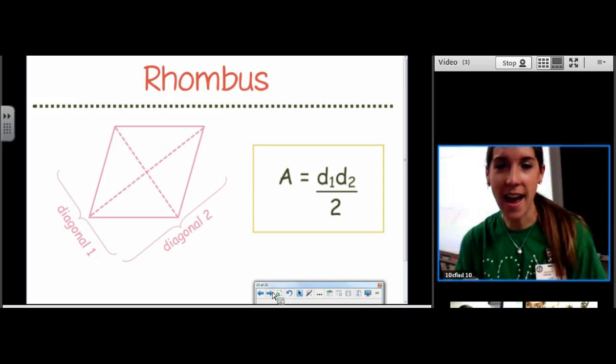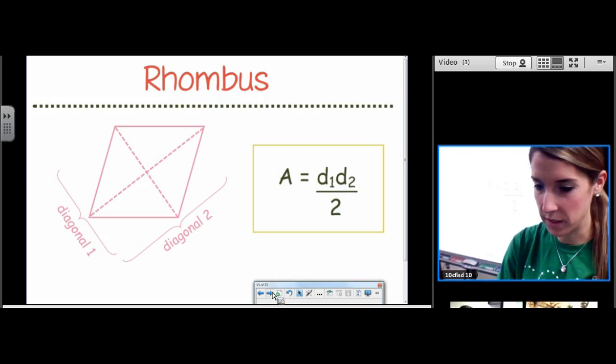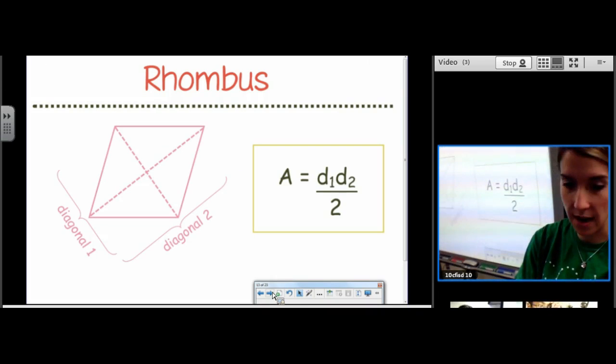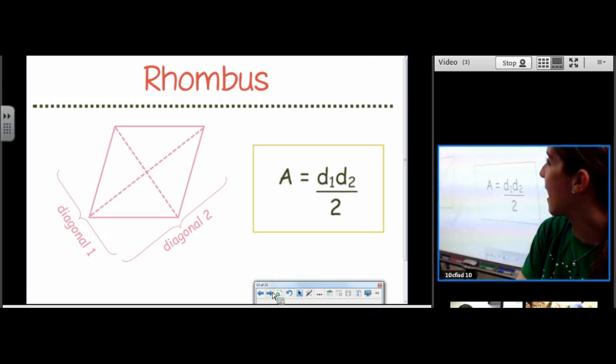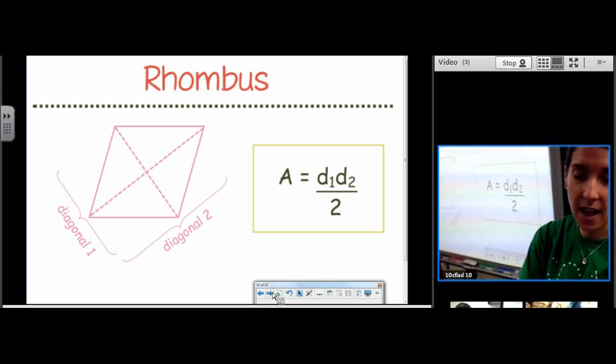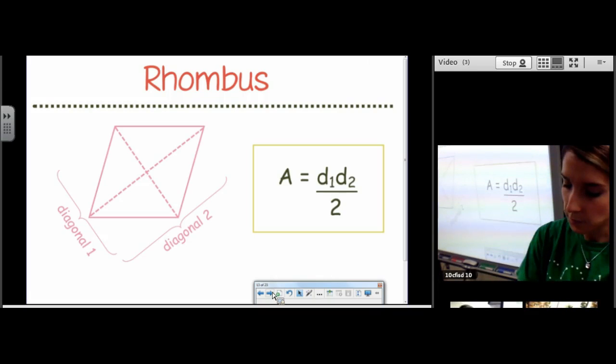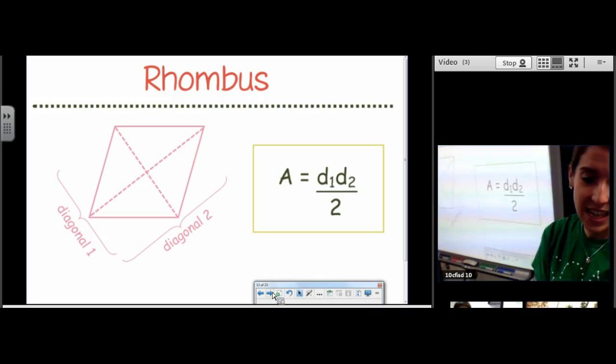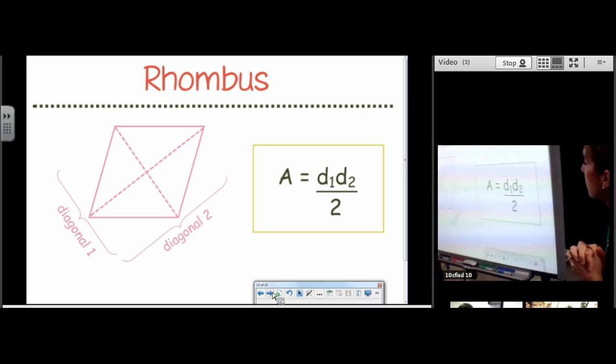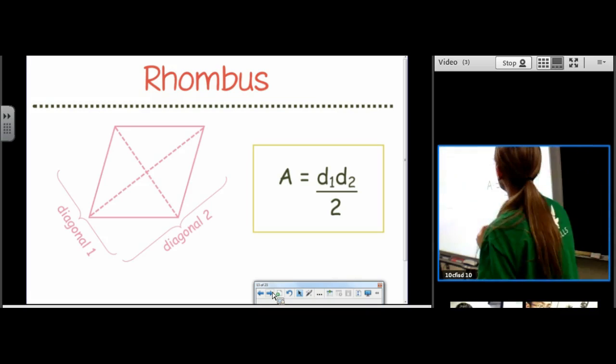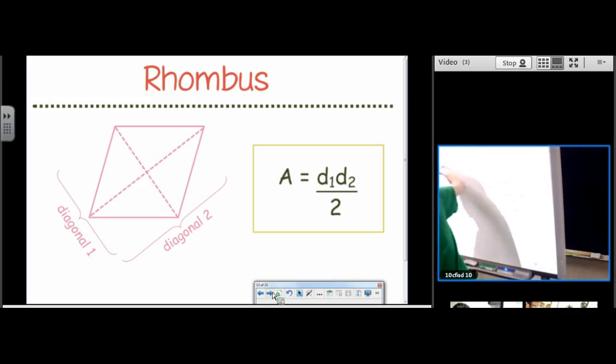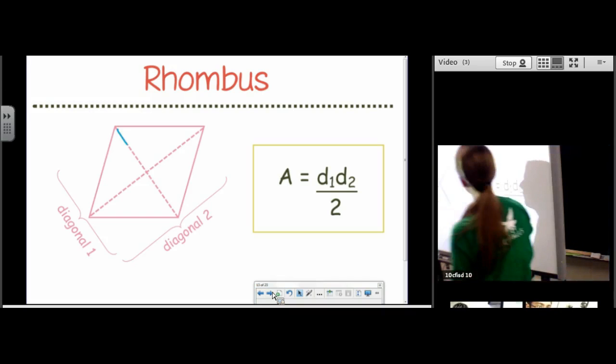I'm not going to derive the formula for the area of a rhombus today. For time's sake, we're almost at 9 o'clock. But go ahead and write this down. This is the formula to how to find the area of a rhombus. Those Ds stand for diagonal. So this area of a formula says diagonal 1 times diagonal 2 divided by 2.